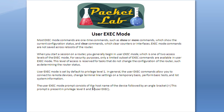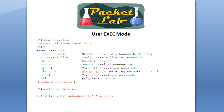The user exec mode prompt consists of the hostname of the device followed by a greater-than sign. This prompt is present in privilege levels zero and one — level one being user exec mode. You should never really be in privilege level zero, but seeing this prompt is a good indicator you're in either level zero or one. On the CLI, with R1 as our hostname, the prompt shows the greater-than sign. Issuing show privilege confirms you're in level one — user exec mode. Issuing a question mark from the command prompt gives you a list of available commands; there aren't many, but a higher level would show many more.